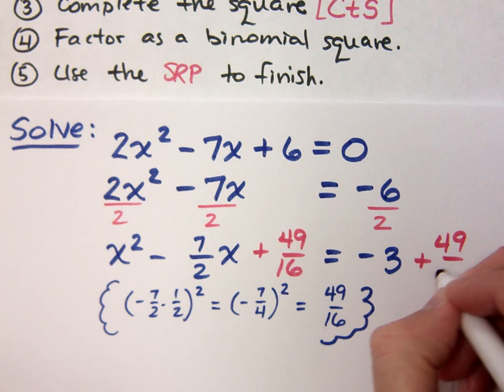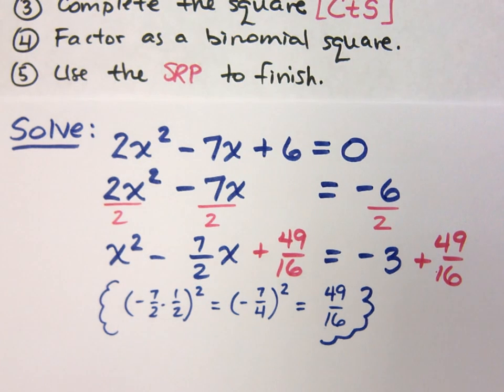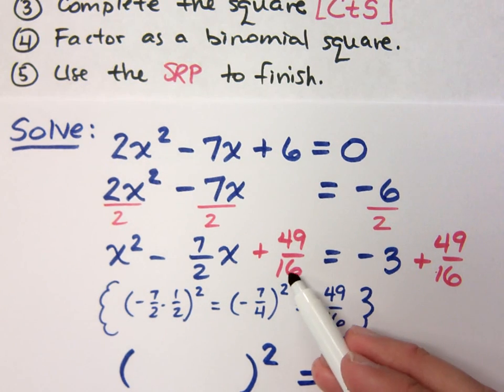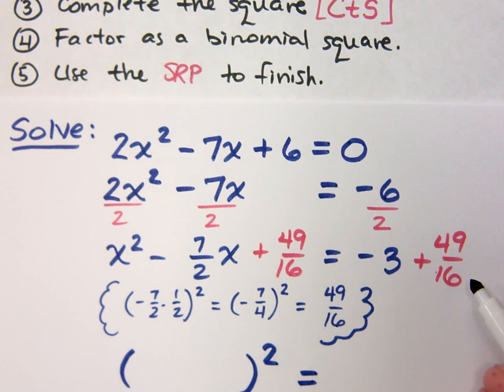Understand why you're adding that amount to both sides. Why did I add that amount to the left side? To complete the square, so that it factors as something squared. Why did I add the 49 over 16 on the right side? To keep it balanced because what I do to one side of the equation, I do it to the other side.